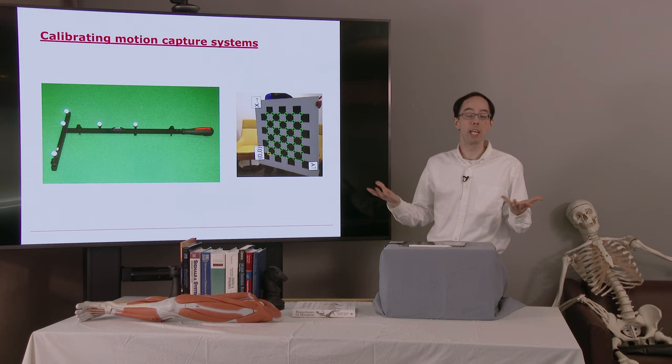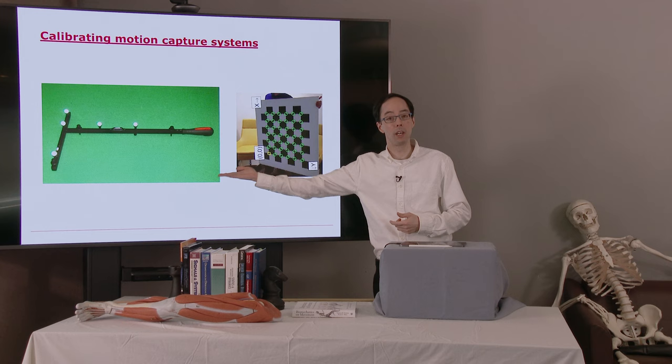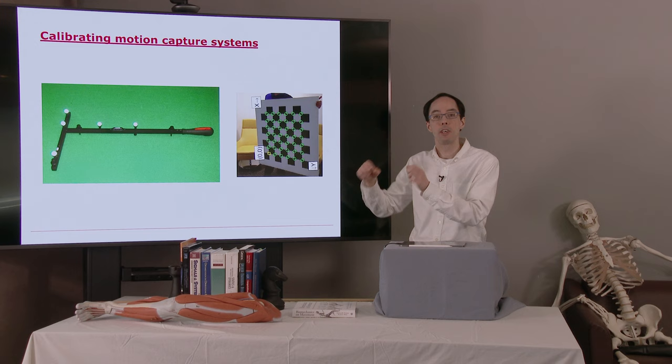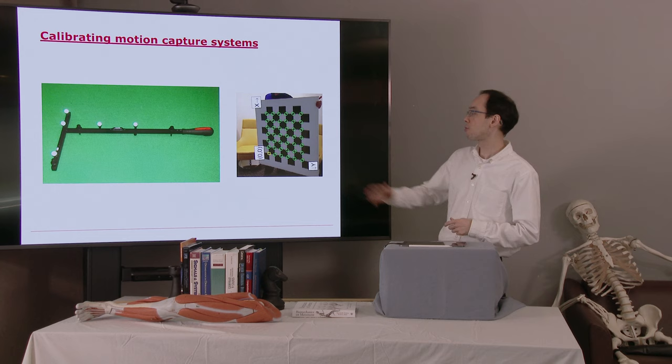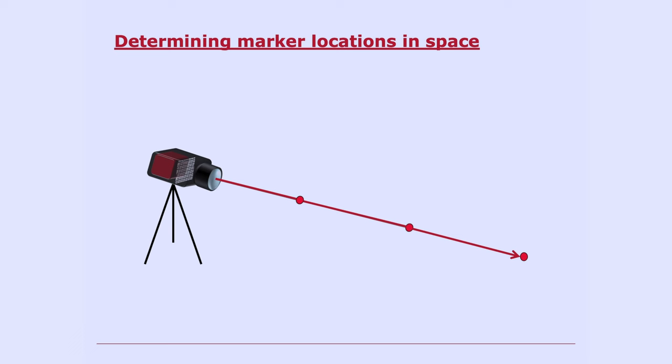One strategy for calibrating a mocap system is using a calibration wand, as shown on the left. This wand has a few markers located at known distances apart, and the motion capture system can use that information to figure out where all the cameras are relative to each other and what their orientations are. Another strategy is using a checkerboard, something like the picture shown on the right. It would accomplish a very similar thing.